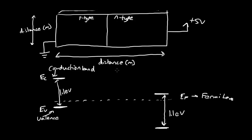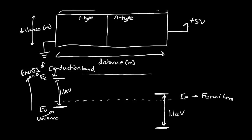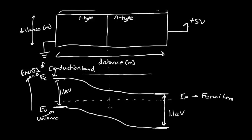The x-dimension is still distance, but now in the y-direction, as we go up, we have energy — the energy of an electron — as distinct from the energy of a hole. So higher on the screen means higher potential energy for the electron. We'll draw the energy bands as they transition from one region to another. This is not drawn to scale, but there it is. This is the physical dividing line down the middle between p-type and n-type.